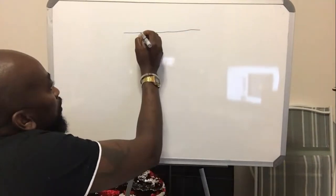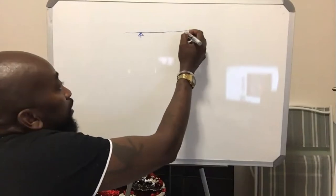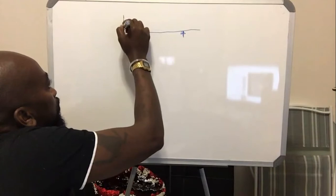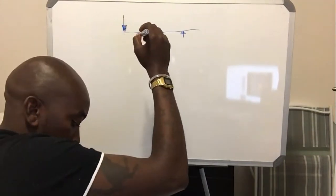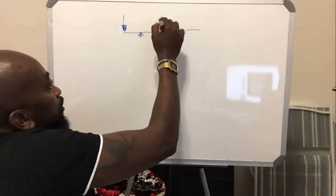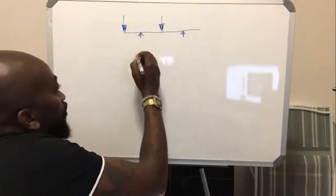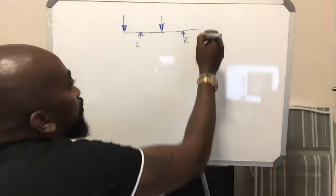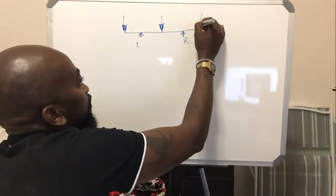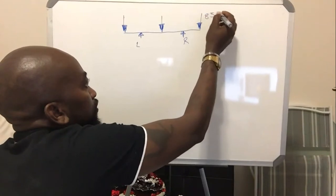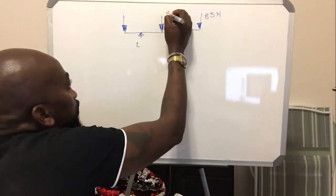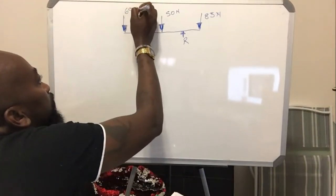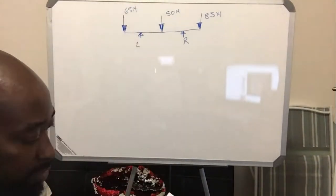They gave us a reaction point there and a reaction point there. You've got a force acting downwards and another force acting downwards — they call this 'left' and they call this 'right'. And there's another force of 85 going down, so this is 85 Newtons, this is 50 Newtons, and this is 65 Newtons.